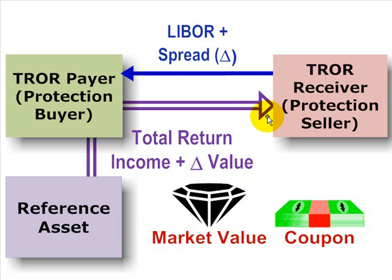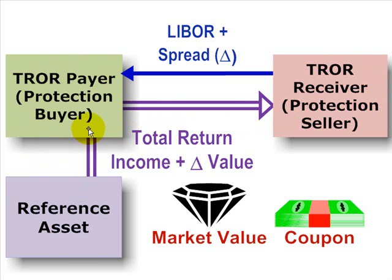So we say the total rate of return receiver — the investor — is synthetically long the reference asset. The payer is synthetically short the asset, because they haven't actually sold the asset. So there can be a balance sheet motive here.